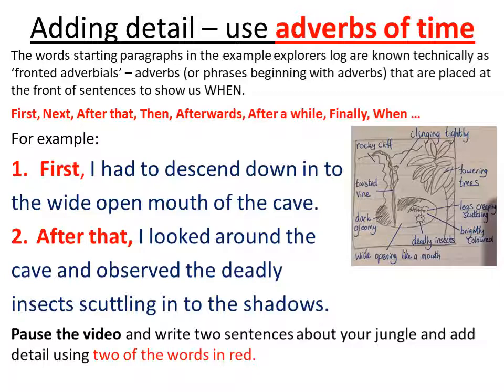I looked back at my picture and thought which word could I use and where? I decided to use the word 'first'. What did my character have to do first? Well: 'First, I had to descend down into the wide open mouth of the cave.' I've used the wide open mouth of the cave and I've used a red word. Then I decided to use 'after that': 'After that, I looked around the cave and observed the deadly insects scuttling into the shadows.' I've used the part about deadly insects and scuttling. I've still got lots of other ideas to use, but those are two really good sentences that are going to be ready for my writing tomorrow.